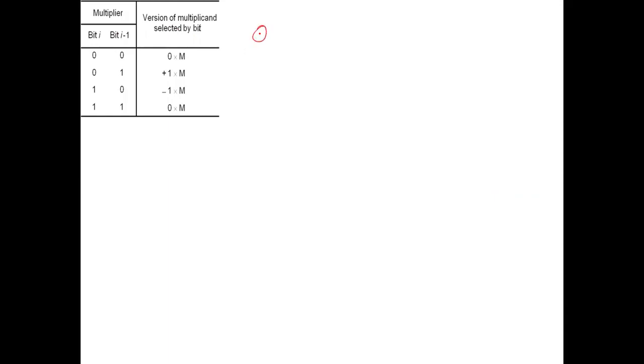Hi everyone. In this video we are going to see multiplication of signed numbers using Booth's recoded multiplier method. In my previous video we discussed two examples: in Example 1, both multiplicand and multiplier are positive numbers, and in Example 2, the multiplicand is positive and the multiplier is negative.